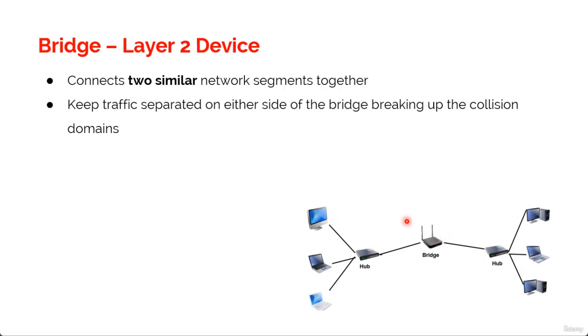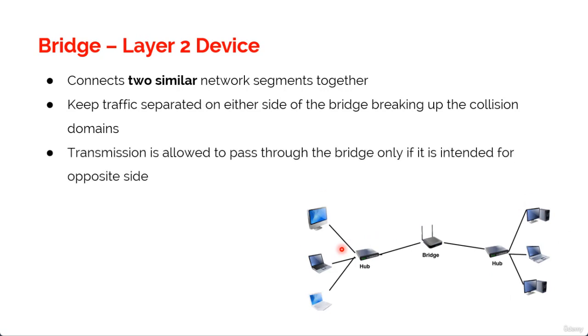So what a bridge does is basically it separates this traffic from this traffic. You don't need to send each and every packet to every other device. Transmission is allowed to pass through the bridge only if it is intended for the opposite side. For example, if this PC wants to send a packet to this PC, then only the bridge will allow the packet to pass, and that is why some network professionals also call bridge an intelligent hub.